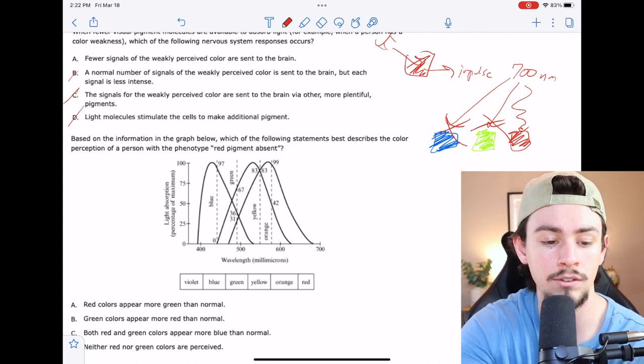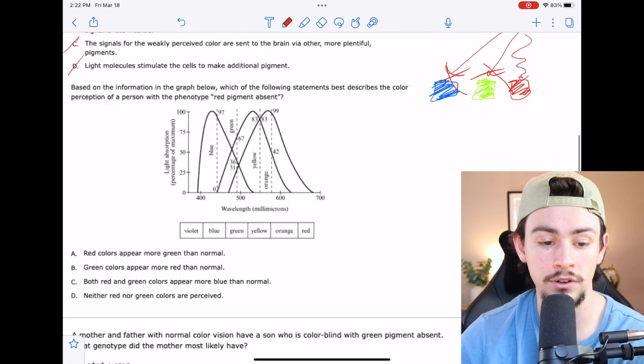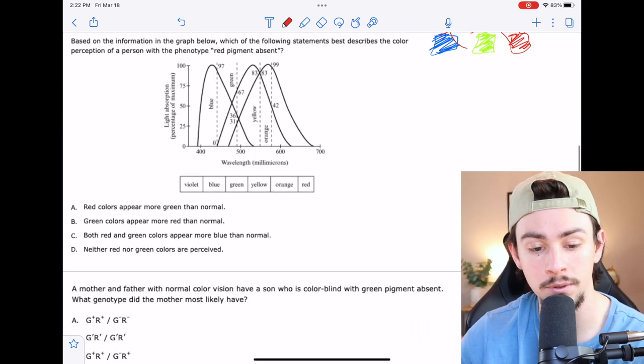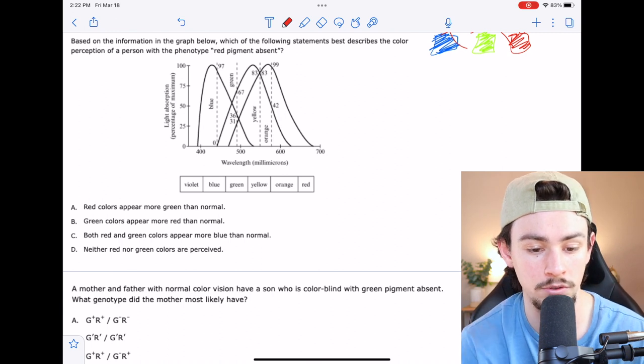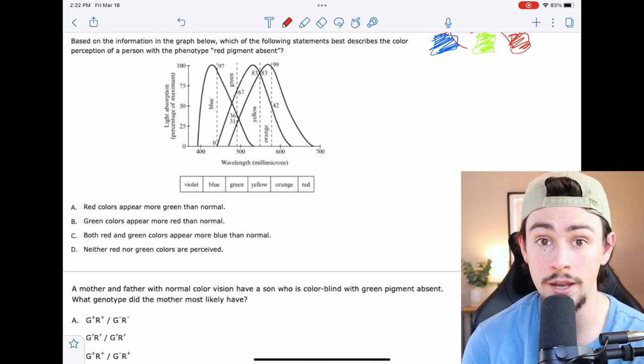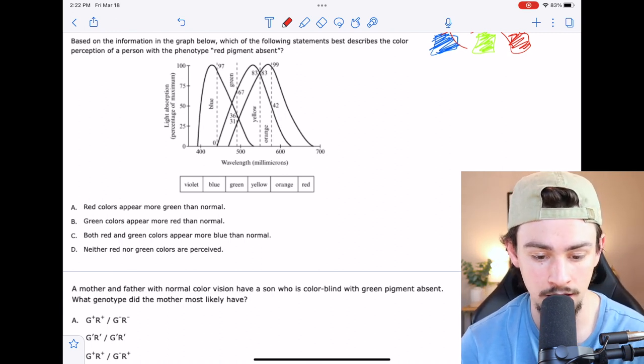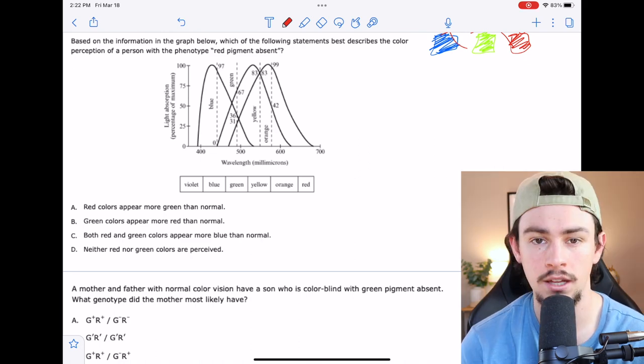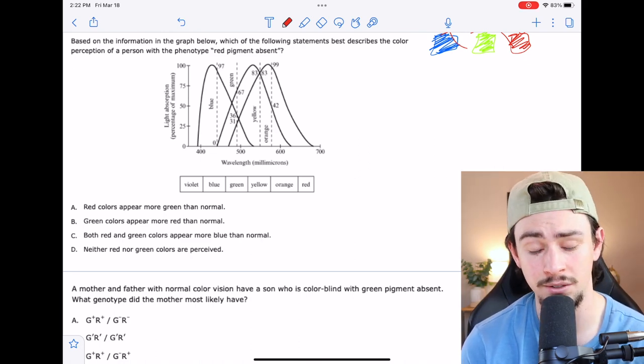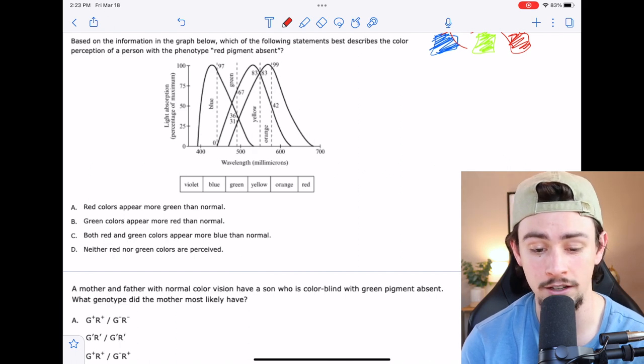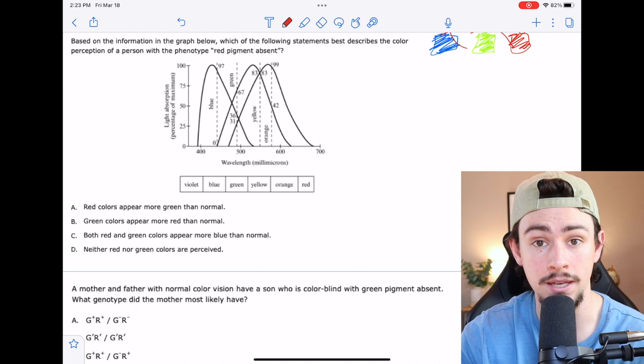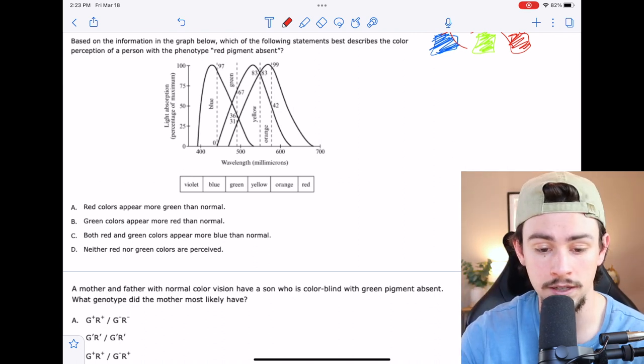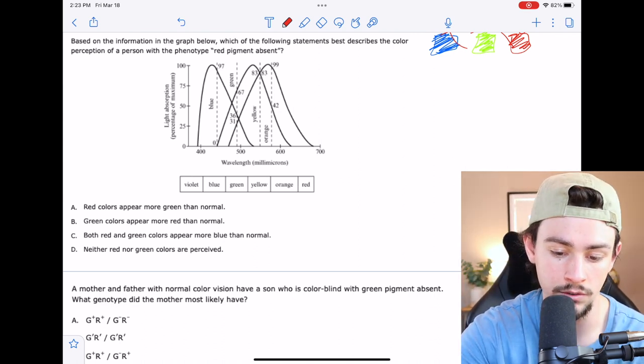Number 37 says, based on the information in the graph below, which of the following statements best describes the color perception of a person with a phenotype red pigment absent? And then they give us this graph. Let's orient ourselves to this graph. So it looks like we've got three peaks. I would assume that those peaks are going to be correlated to red, green, and blue pigment.